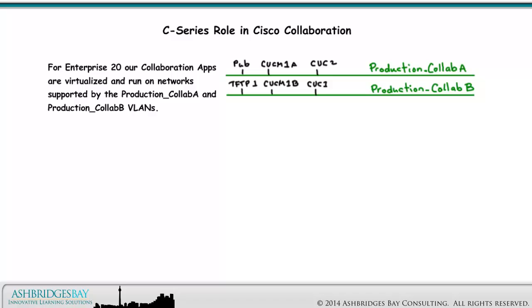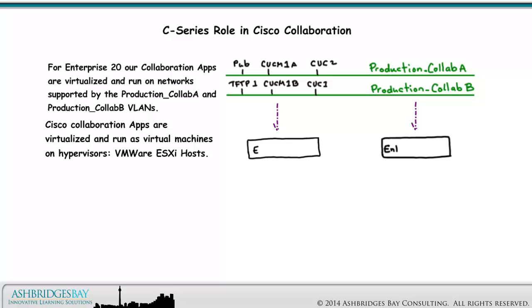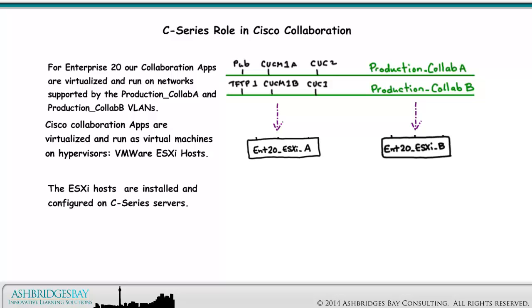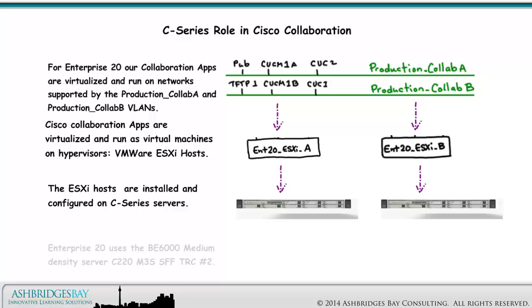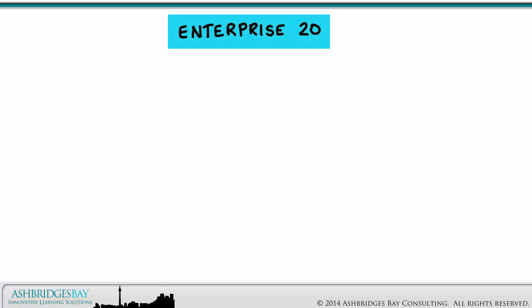For Enterprise 20, our collaboration apps are virtualized and run on networks supported by the Production Collab A and Production Collab B VLANs. Cisco collaboration apps are virtualized and run as virtual machines on hypervisors — VMware ESXi hosts. The ESXi hosts are installed and configured on C-Series servers. Enterprise 20 uses the BE6000 medium density server C220 M3S SFF TRC No. 2. Deployment of other C-Series servers are very similar and we'll discuss other options as soon as we can.